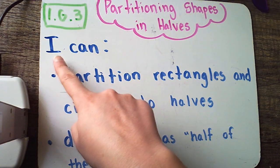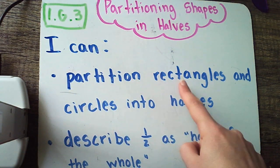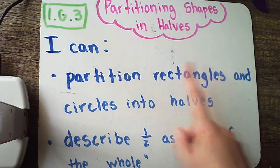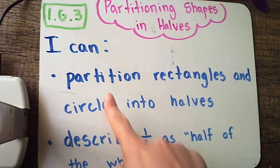So here are our I can statements. I can partition rectangles, rectangles include squares, squares are also rectangles, and circles into halves. So we're going to be partitioning or cutting rectangles, squares, and circles into halves, and we're also going to be able to describe half as half of the whole. Let me show you a little bit about what I mean.